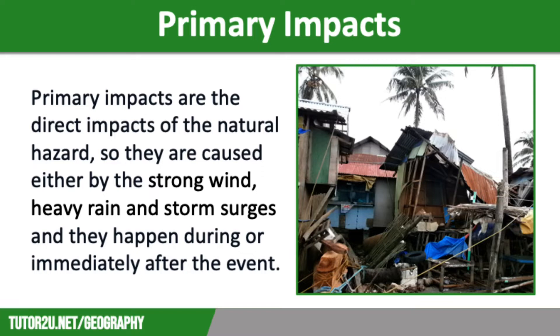Primary impacts are the direct impacts of the natural hazard, e.g. the effects of the strong winds, heavy rain or storm surges. They happen during or immediately after the event.